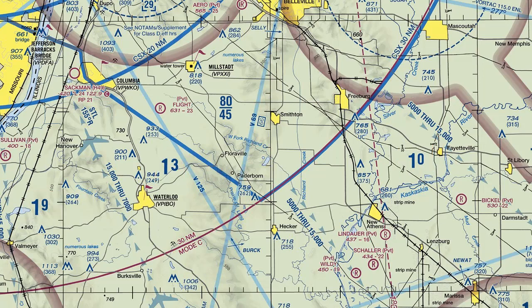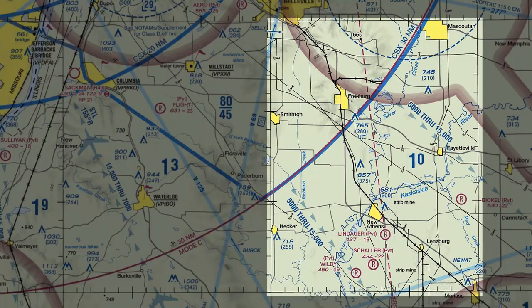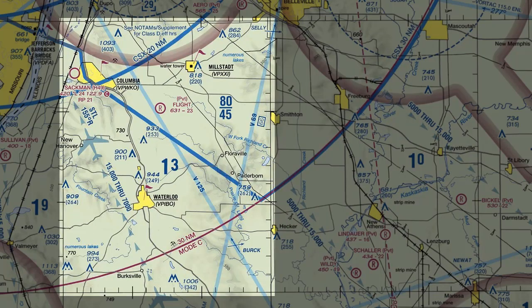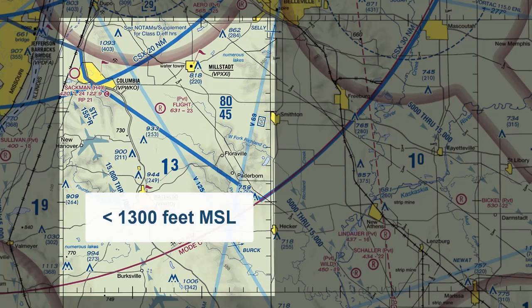So, for example, the highest obstacle for this quadrangle is below 1,000 feet MSL. The highest obstacle for this quadrangle is below 1,300 feet MSL.